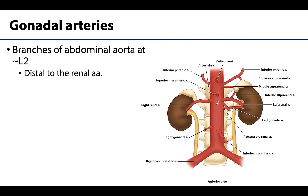Just inferior to where the renal arteries come off of the abdominal aorta, you will have the gonadal arteries. You can see the left gonadal artery here, and you would have a right one a little bit lower down — generally right around the L2 region.